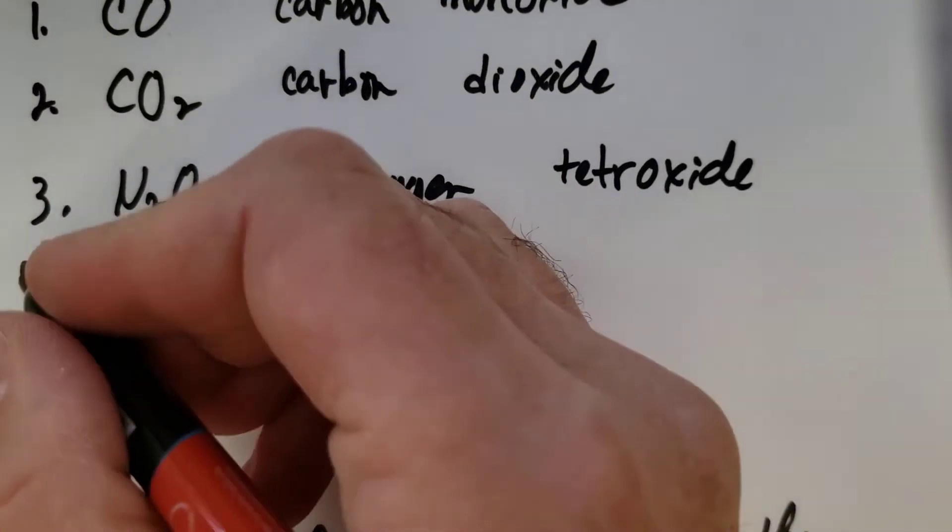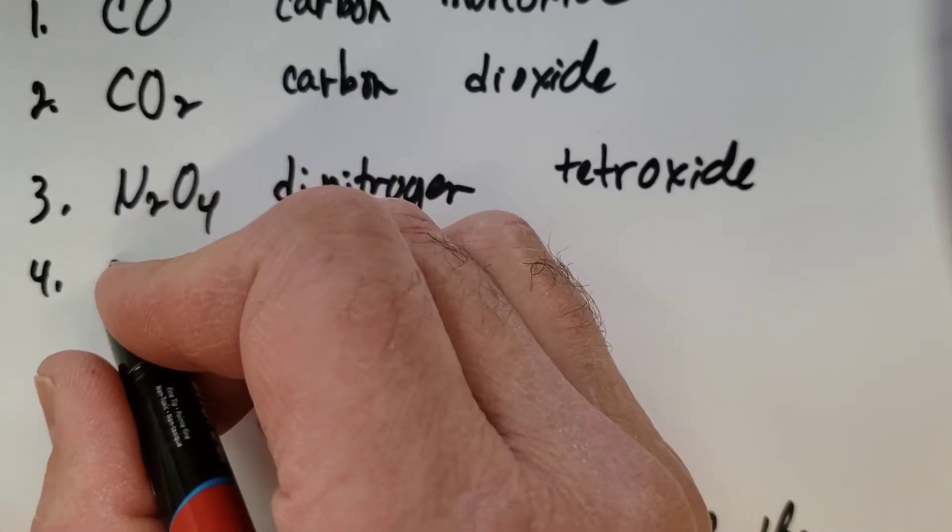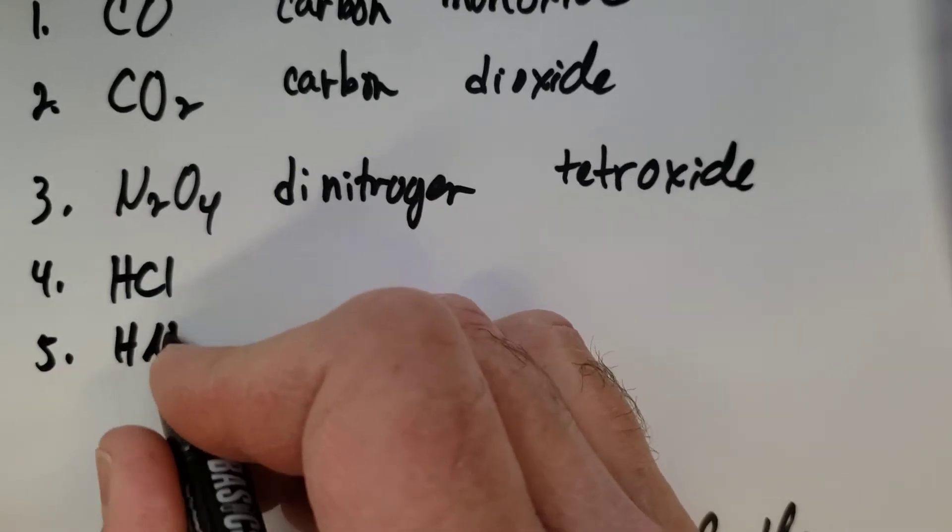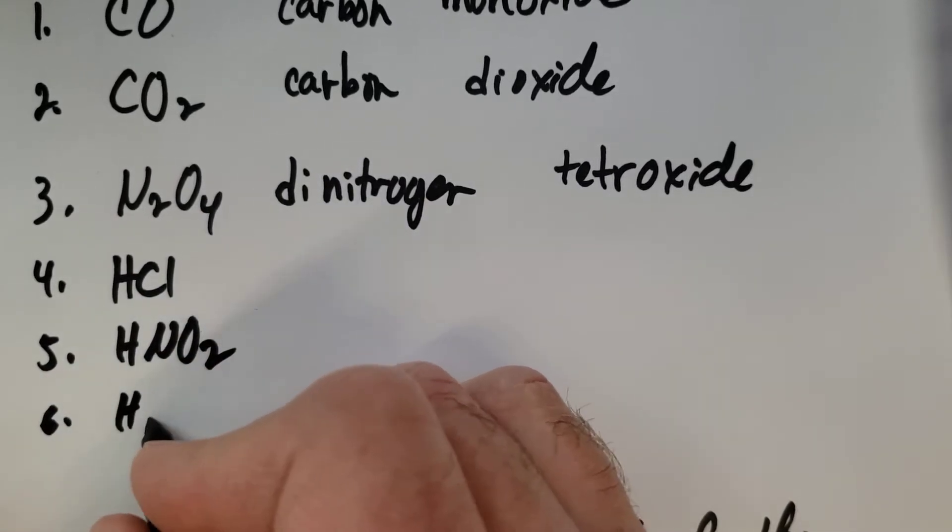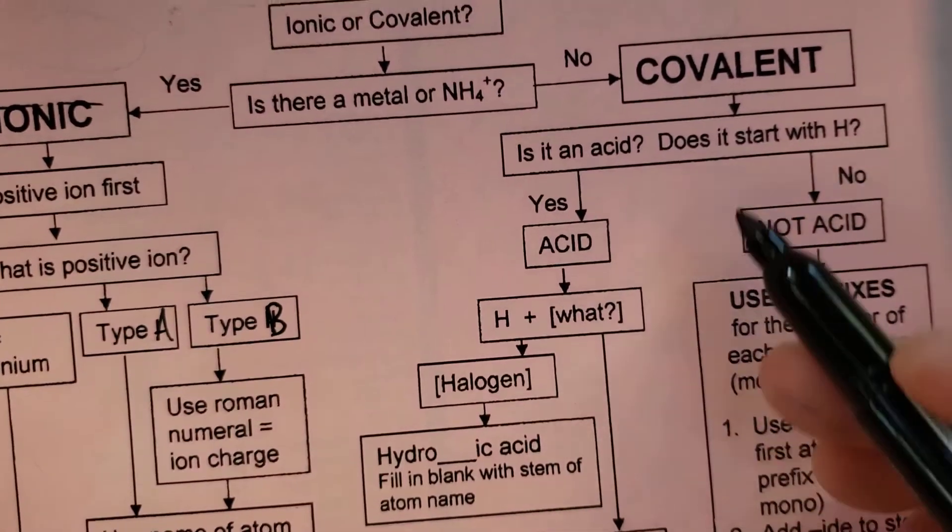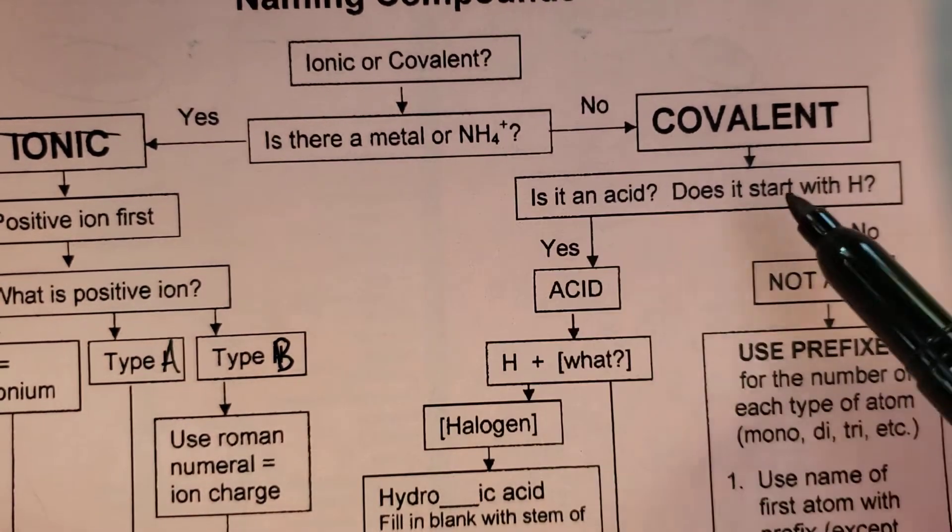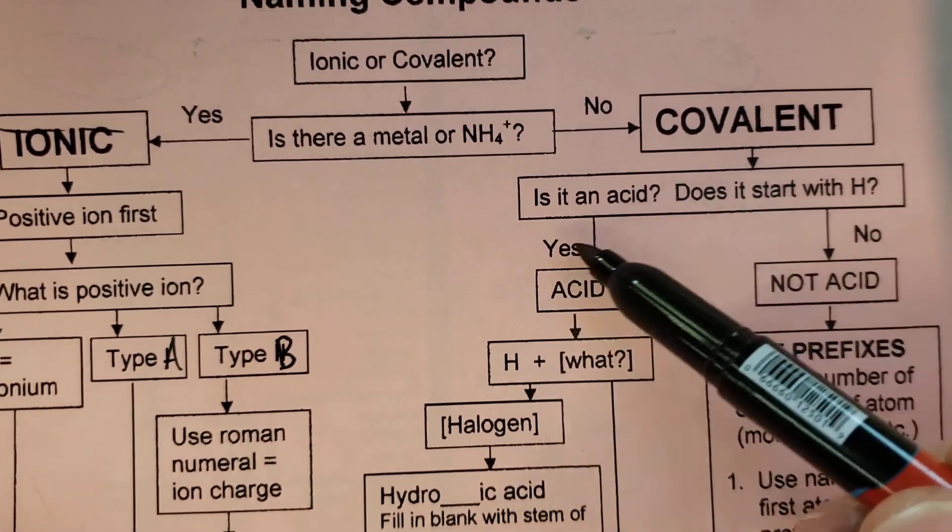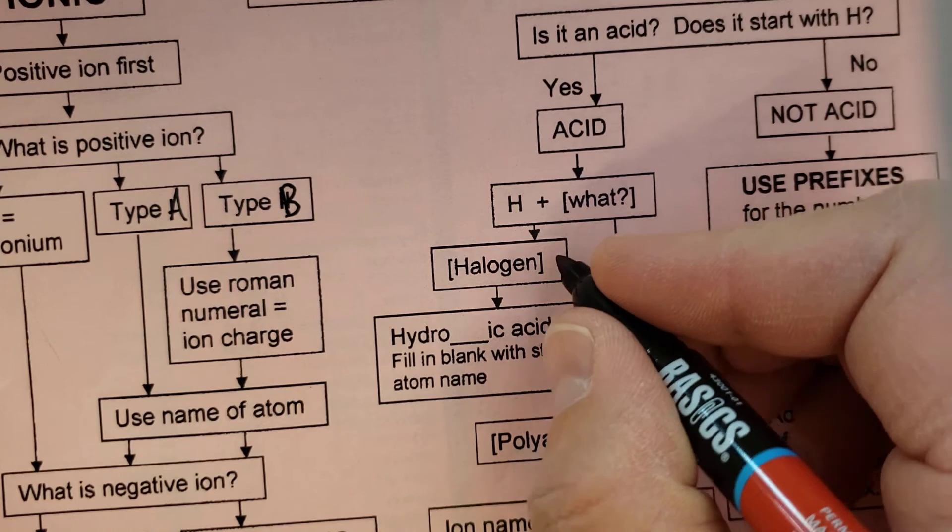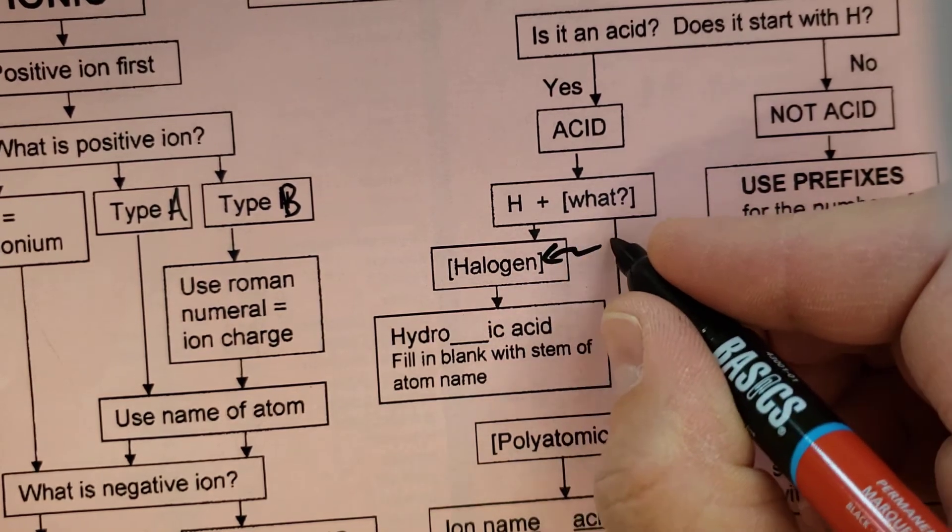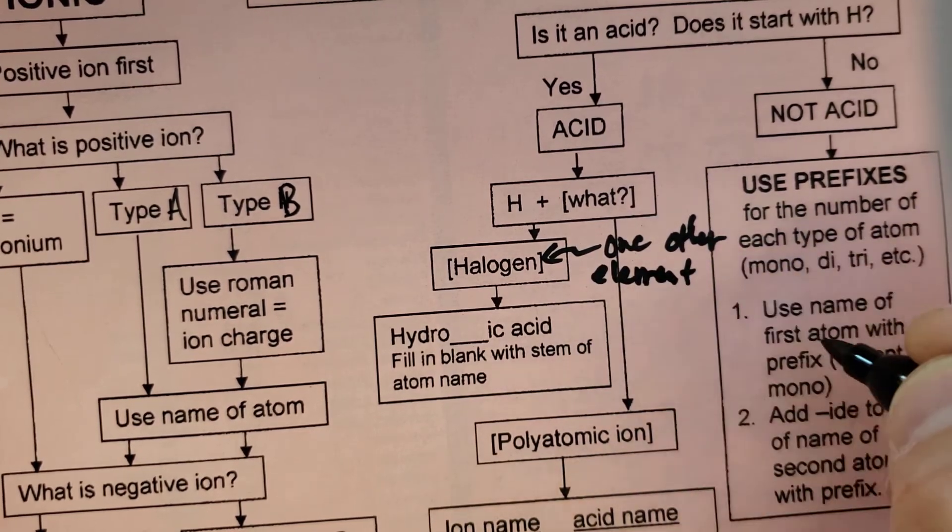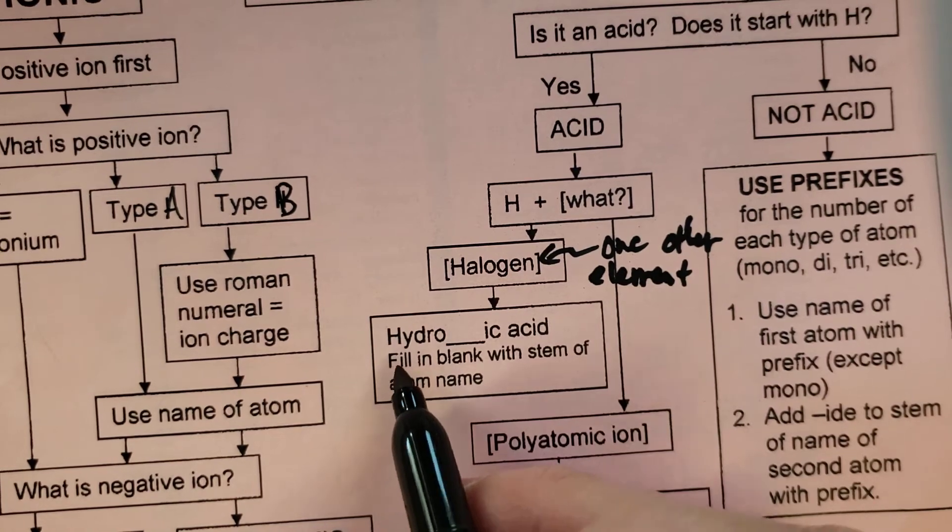Let's maybe take a look at acids here too. So I'm going to throw a couple of acids into here. We'll throw in this one, this one, and this one. Because the naming is a little bit different. So if we look back to here, if it doesn't begin with the metal, it's covalent, then do the H test. Does it begin with an H? Then yes, it's an acid. And H and what? So if it's H and a halogen, or we could simply say one other element...